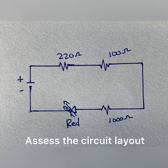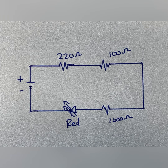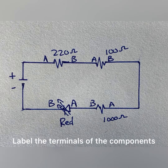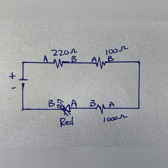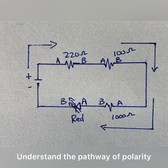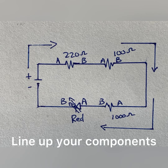Let's get started with assessing our series circuit here. It's going to help us out a lot if we label our terminals A and B. We also want to understand the pathway of our polarity — not talking about electron flow theory here, but simply our polarity and how it lines up.